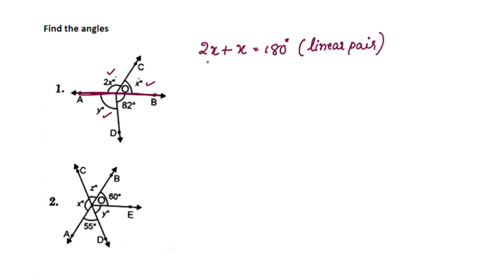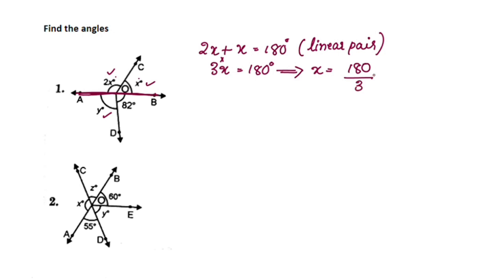2x plus x is 3x. 3x is equal to 180 degrees. So x is equal to 180 divided by 3, which is equal to 60 degrees.